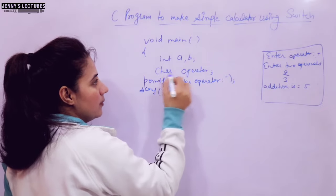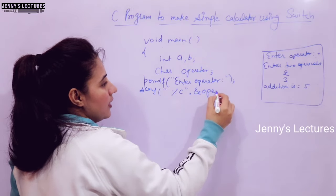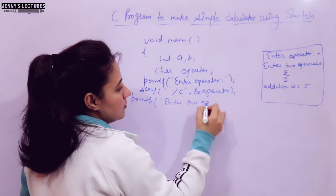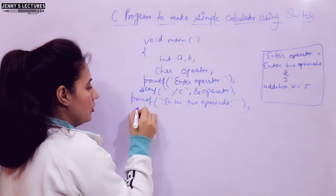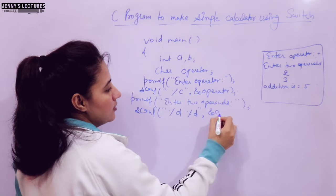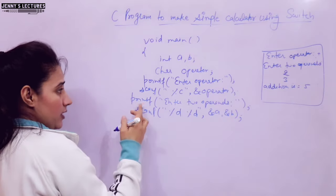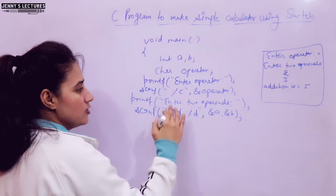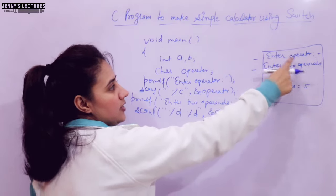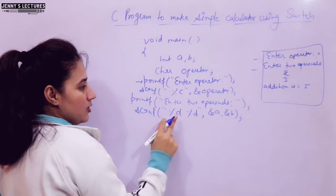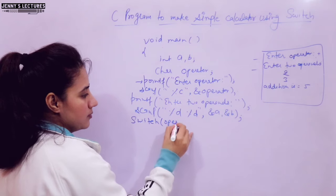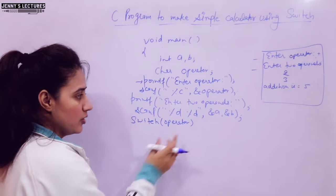Next, print 'enter two operands' and use scanf with two %d format specifiers to read address of a and address of b. Now write switch(operator). We pass the operator variable because based on this we select from the choices. The expression result should be an integral type — and since characters are stored using ASCII values, passing plus will map to the ASCII value of plus, which is an integer. So we can pass operator here.